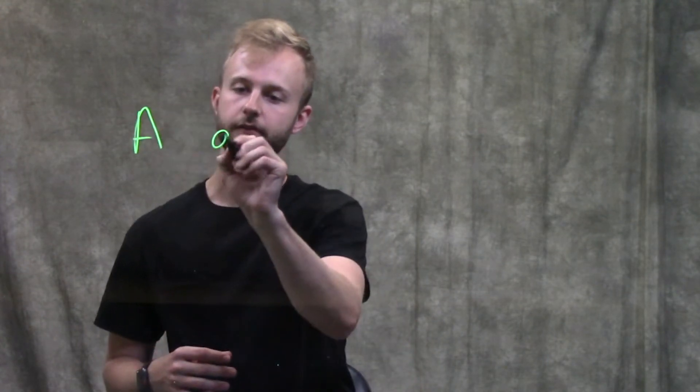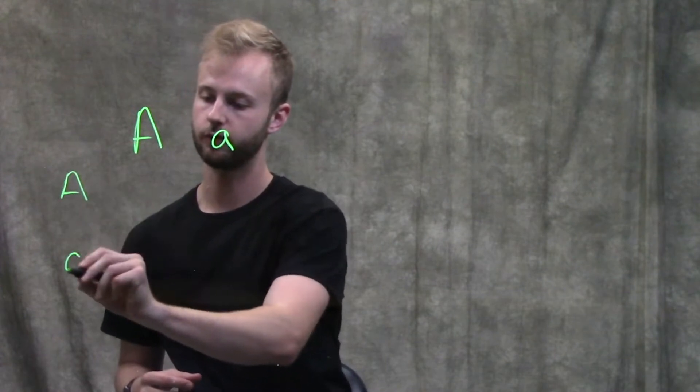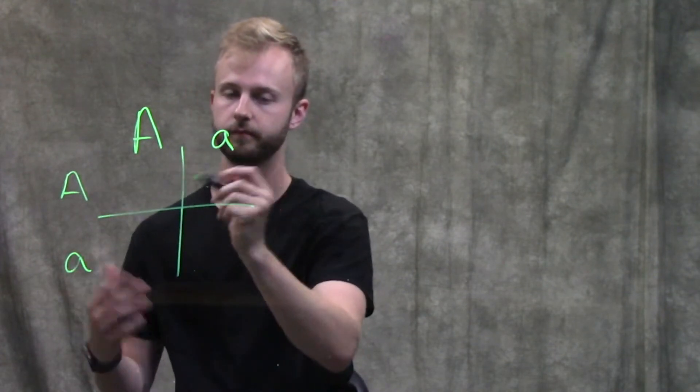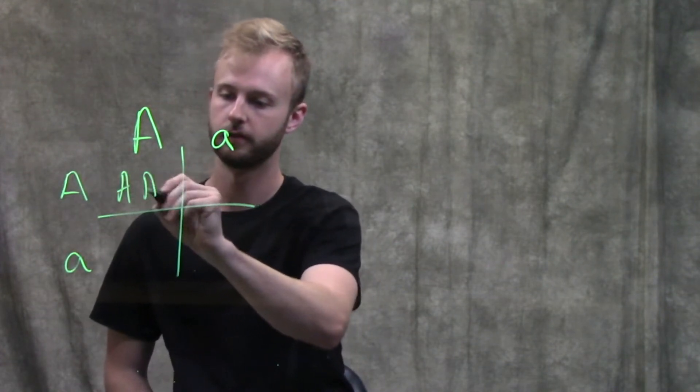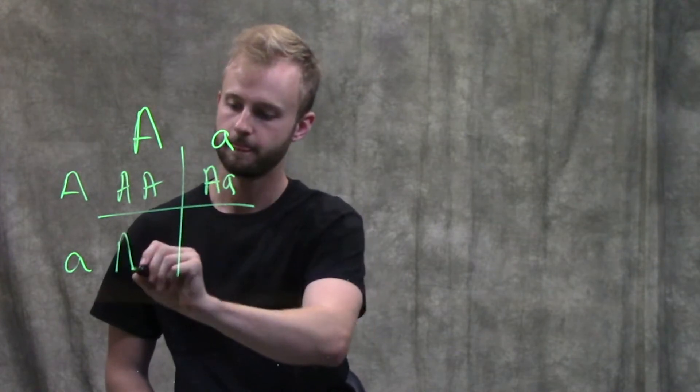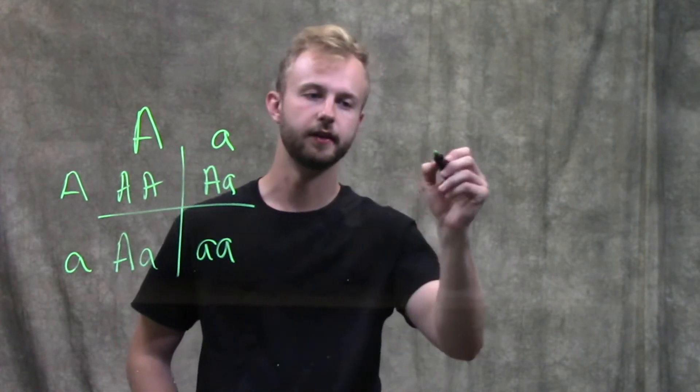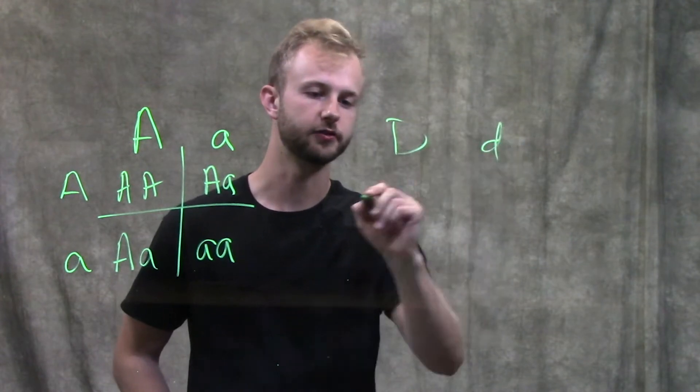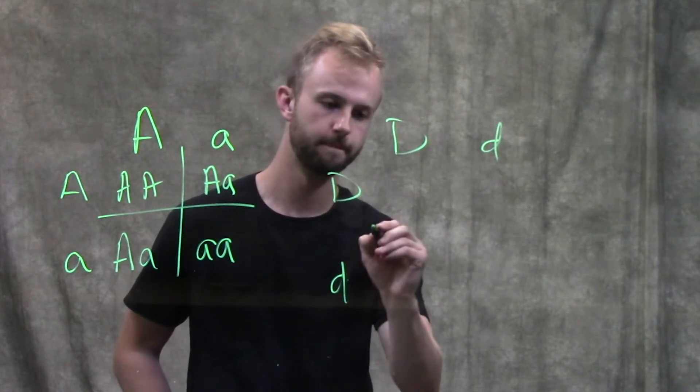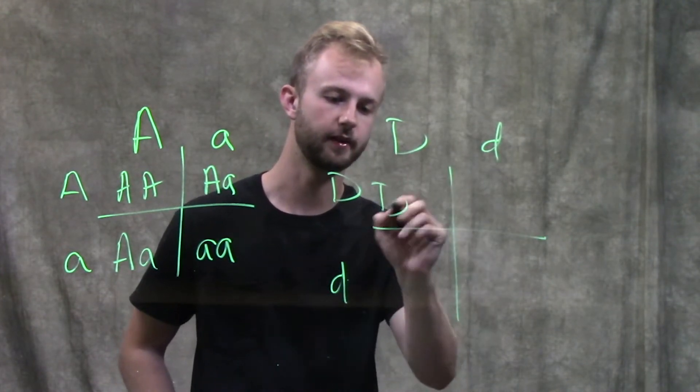We use those two rules in different situations. Let's look at an example. Let's say we have one Punnett square for a set of alleles, and then a second Punnett square for a different set of alleles.